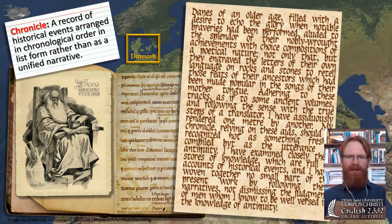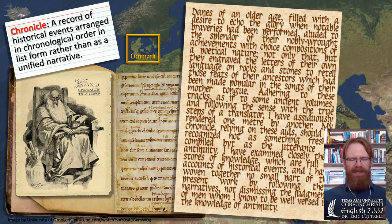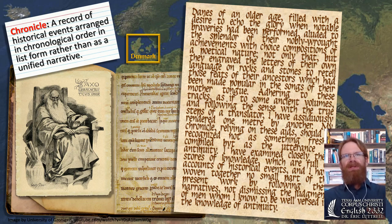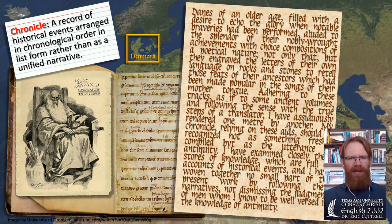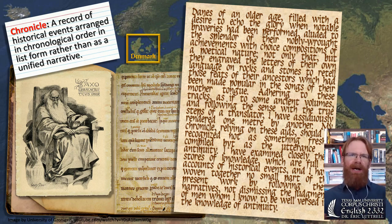But Saxo is not just trying to write a list like the Anglo-Saxon Chronicle — he is trying to make this into a story. He admits that he's taking these different sources from all over the place, including oral tradition. He even mentions that he's using runic inscriptions, saying that the Danes engraved the letters of their own language on rocks and stones to retell the feats of their ancestors, which had been made popular in the songs of their mother tongue. These are the sources Saxo admits he's pulling together and putting into this larger chronicle.